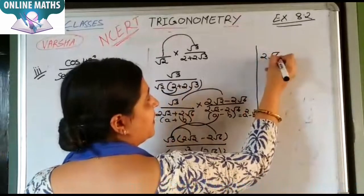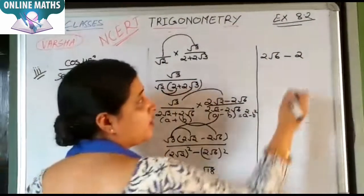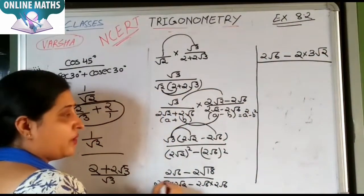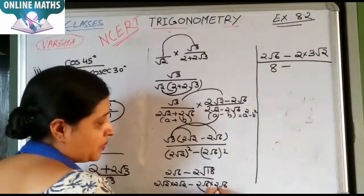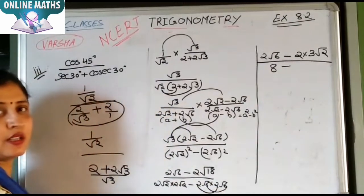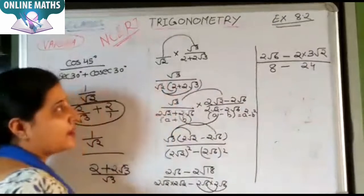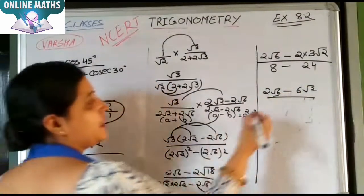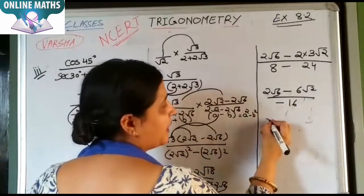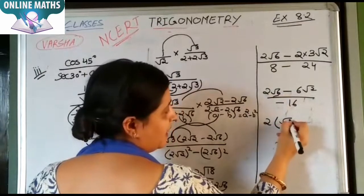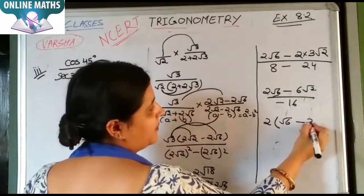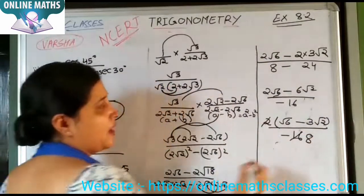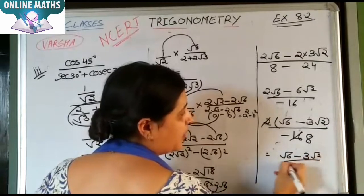2 under root 16 minus 2 under root 18, which is 3 under root 2. The denominator: 2 under root 2 squared is 2 to the 4, minus 2 under root 6 squared. Under root 6 into under root 6 is 6, so 4 times 6 is 24. This gives 2 under root 6 minus 6 under root 2 upon 8 minus 24, which is minus 16. Taking 2 as common from numerator gives 3 under root 2 upon minus 16. The answer simplifies to under root 6 minus 3 under root 2 upon minus 1.